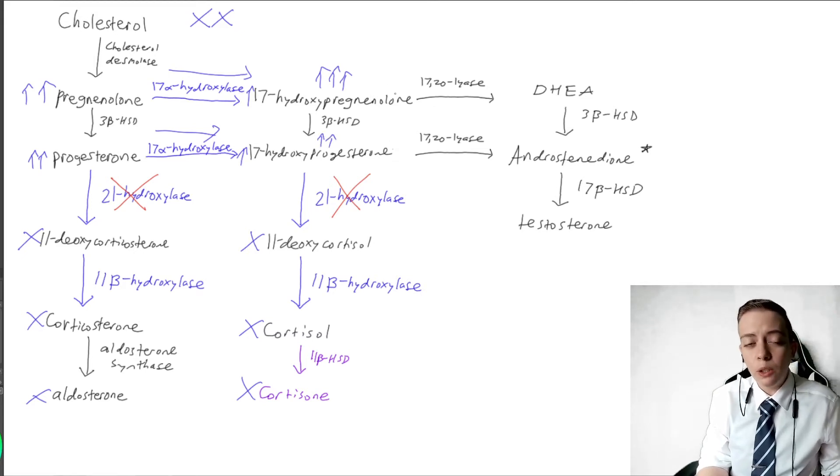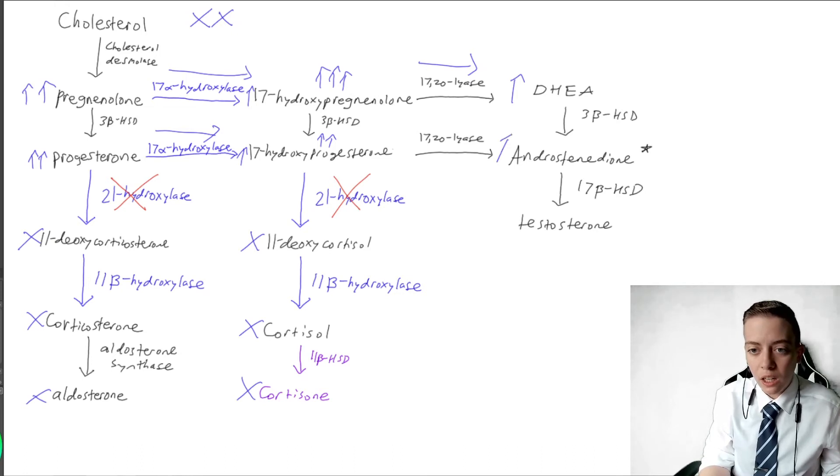So the only thing it can do now is to funnel into 17-20 lyase, and it's going to favor androgen production. So we're going to get increased DHEA. And then DHEA is going to be converted by 3-beta-HSD because we still have this, this is still functional. We're going to get increased androstenedione, and then we're also going to get increased testosterone.